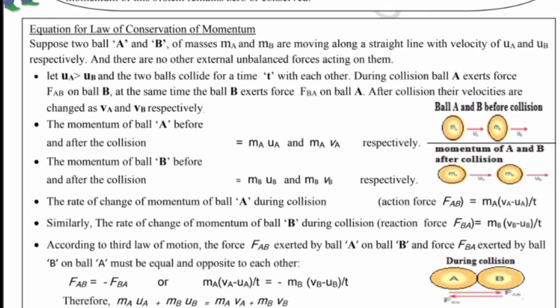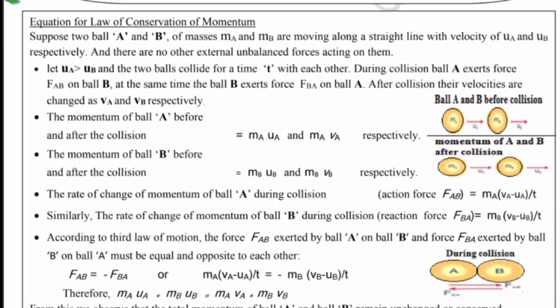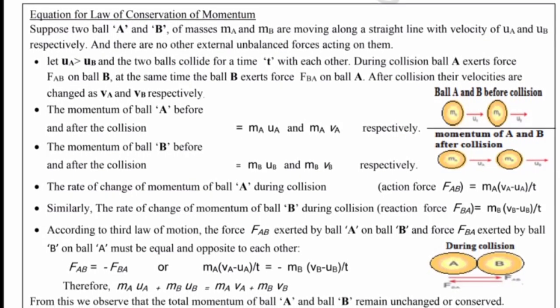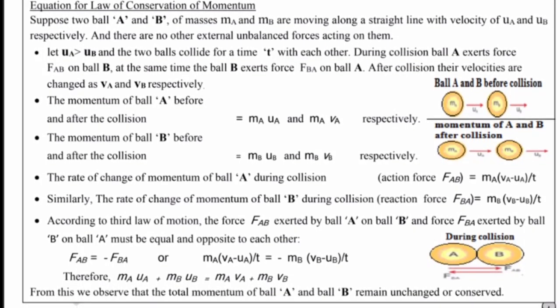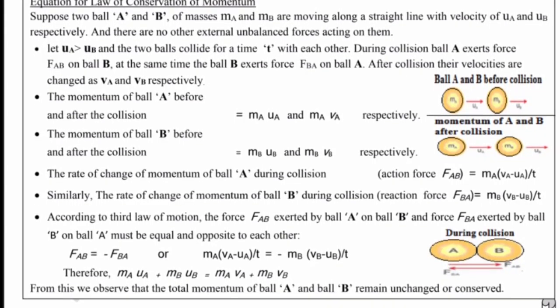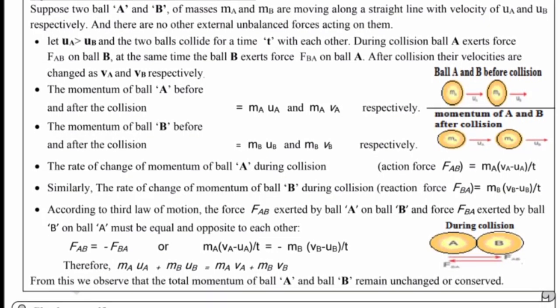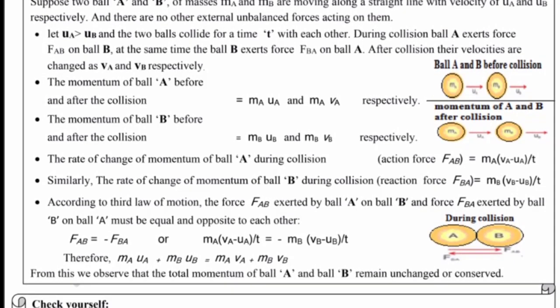The rate of change of momentum of ball A during collision, action force FAB, is equal to mA(vA - uA)/t. Similarly, the rate of change of momentum of ball B during collision, reaction force FBA, is equal to mB(vB - uB)/t.